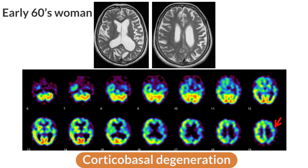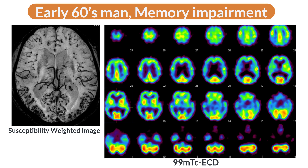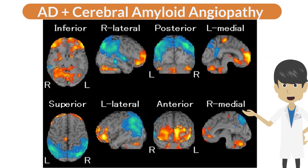In corticobasal degeneration, the left pericentral sulcus cortex — which is preserved in Alzheimer's disease — is also characterized by decreased perfusion. A case showing multiple microbleedings in the temporal and occipital lobes on susceptibility-weighted imaging with impaired memory demonstrates decreased perfusion in the temporoparietal cortex, as well as from the posterior cingulate gyrus to the precuneus — the brain perfusion pattern of Alzheimer's disease. This case is considered to be Alzheimer's disease plus cerebral amyloid angiopathy.